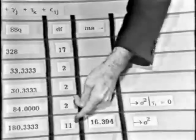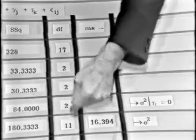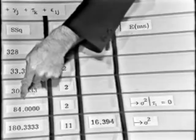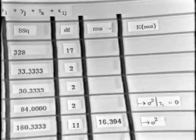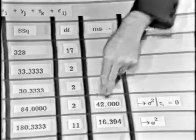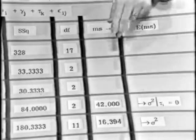if the treatment effects are all zero, then what I've done is I've partitioned the sum of squares into two components, one with two degrees of freedom, one with eleven. And so this eighty-four, this sum of squares eighty-four over here, divided by its degrees of freedom, would provide another estimate of the variance. And so I'd have a forty-two. It also estimates sigma squared.